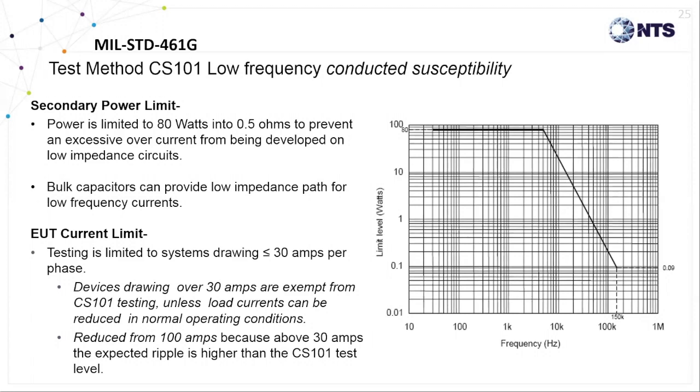Power limit here is determined by replacing the EUT with a half-ohm resistor while achieving the voltage criteria of curve one over the entire test frequency range.